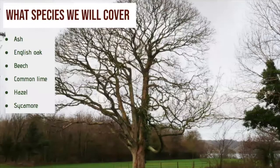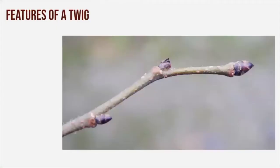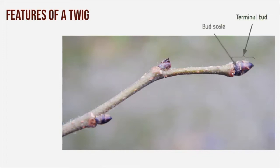The trees we'll look at are ash, English oak, beech, common lime, hazel and sycamore. Let's start with a closer look at features of a twig. The twig is the outermost part of a branch and contains the terminal bud. This is the undeveloped tip of the young shoot, and buds are complete with protective covers called scales. The scales can vary in colour, shape, size and number, and are often a useful way of identifying a tree.